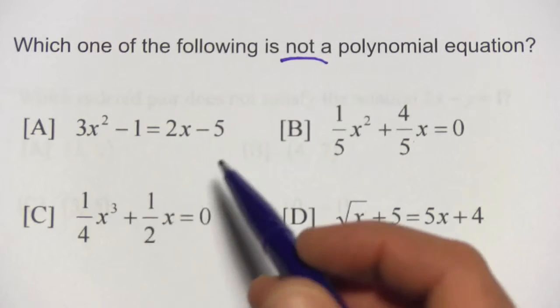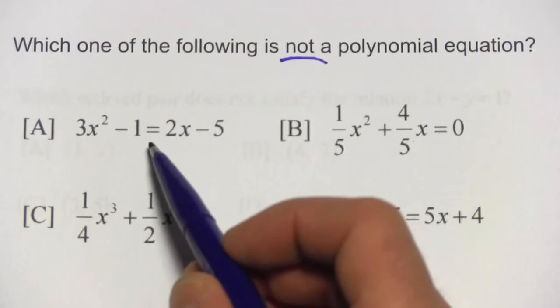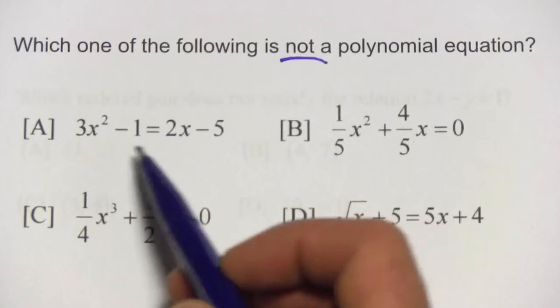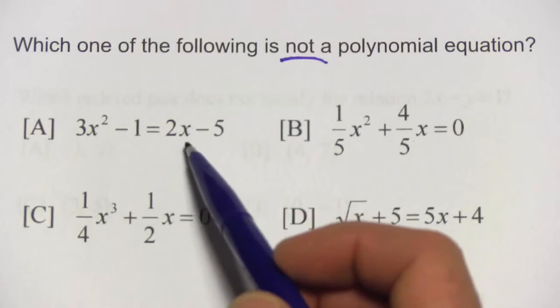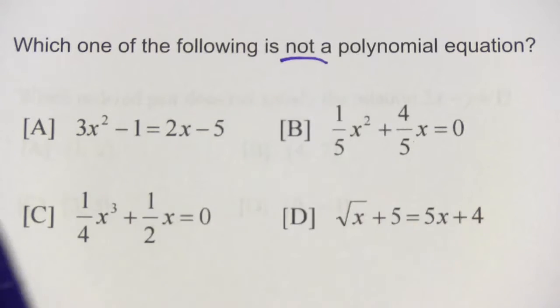Well, we've got 3x squared minus 1 equals 2x minus 5. It's got an equal sign, and it's got some positive whole number powers of x, x to the second power, x to the first power. All of that's fine. That is a polynomial equation. No problem.